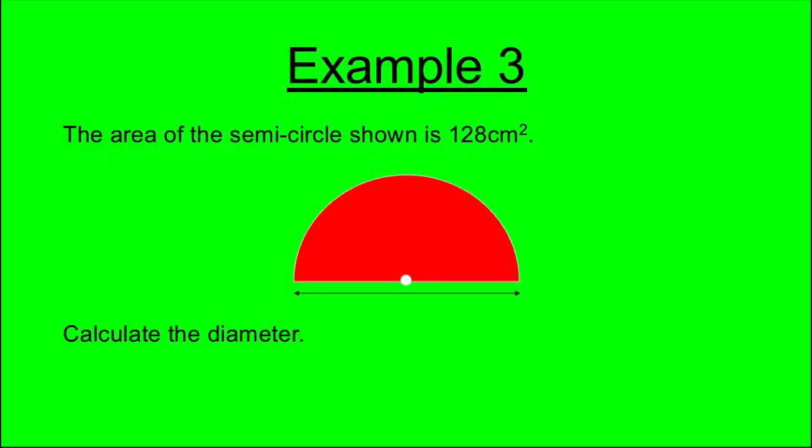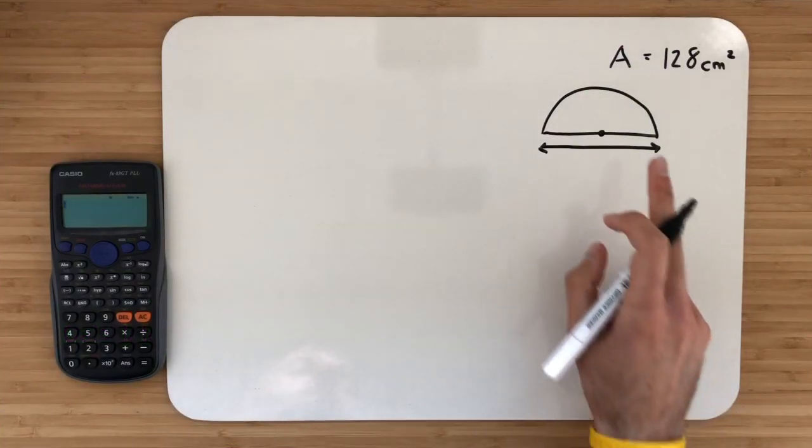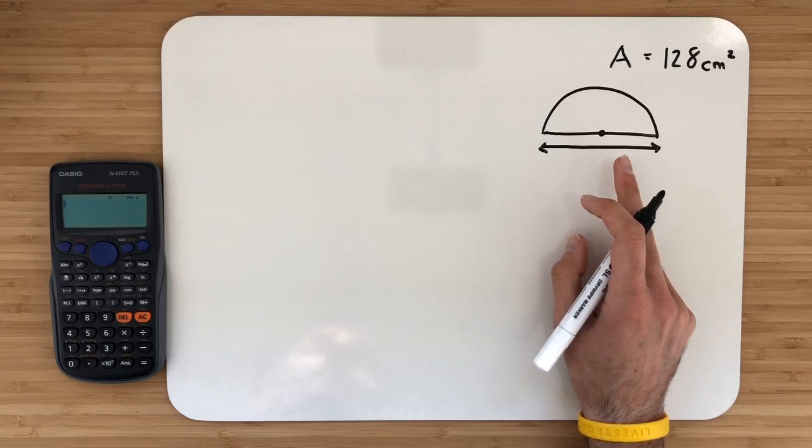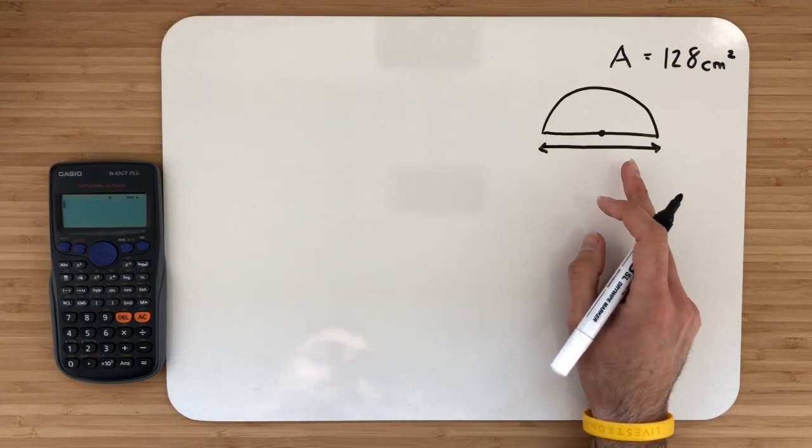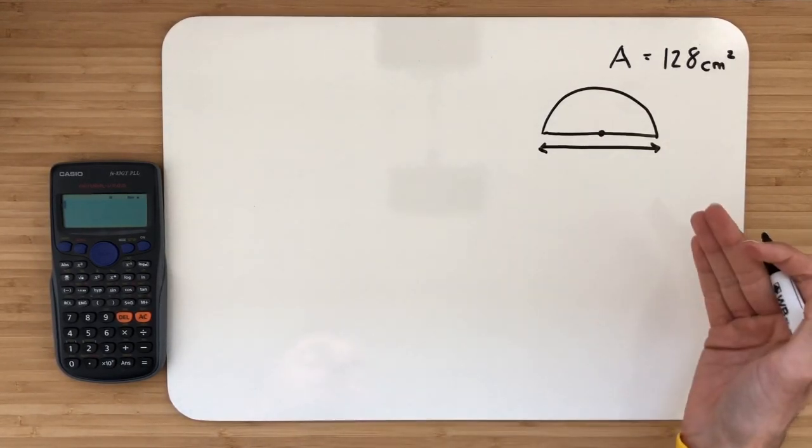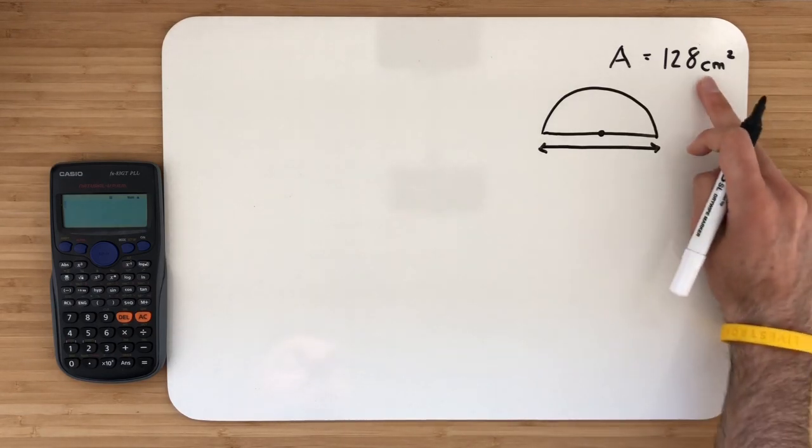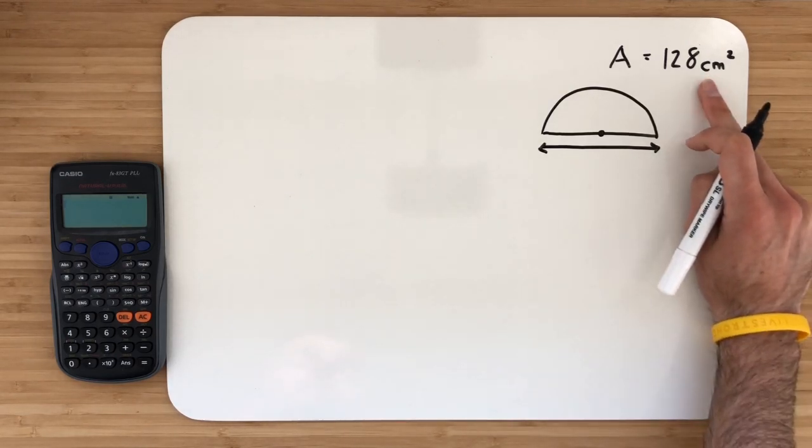Example 3. The area of the semicircle shown is 128 square centimetres. Calculate the diameter. We're given the area of this semicircle is 128 square centimetres and we want to calculate the diameter. Diameter is used in the circumference formula. Radius is used in the area formula. But remember, the radius and diameter are very easily linked because if you multiply the radius by 2, you get your diameter. We've been given the area, so we need to work with this formula.